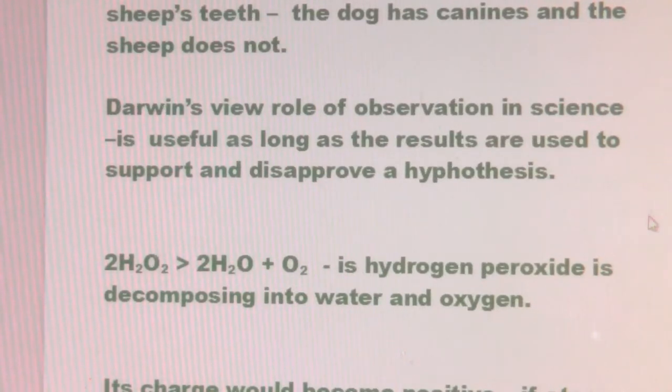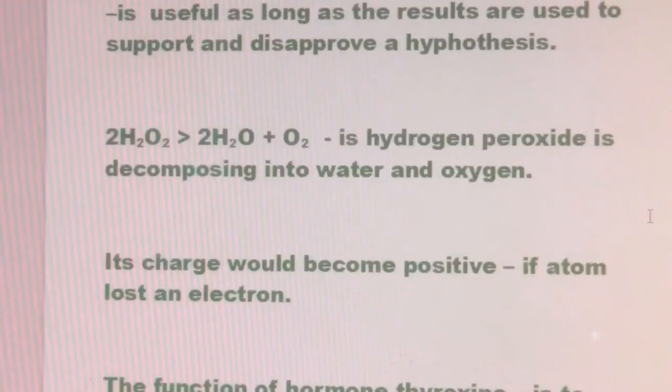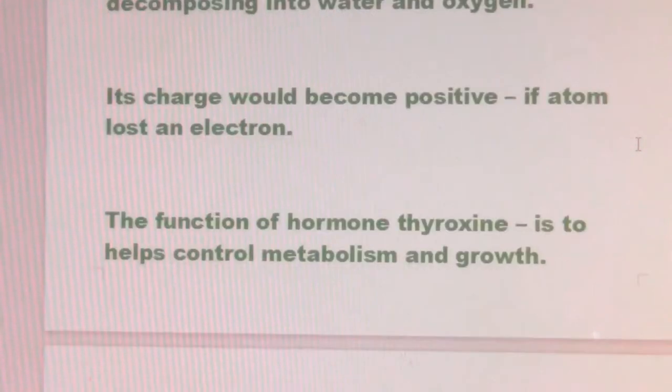Darwin's view: the role of observation in science is useful as long as the results are used to support and disprove a hypothesis. 2H2O2 → 2H2O + O2 is hydrogen peroxide decomposing into water and oxygen. Its charge would become positive if an atom lost an electron.